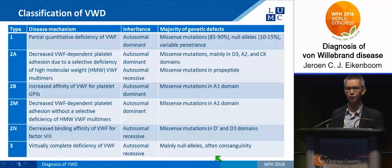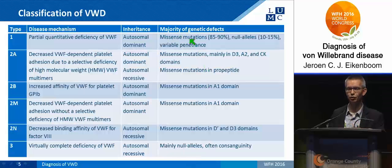In type III, the mutations are mainly null alleles, whereas in type I, most mutations are actually missense mutations, and only a minority are null alleles.